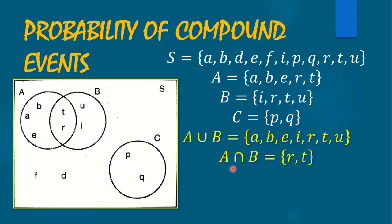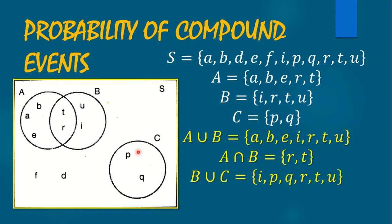For A intersection B, it means the outcomes that are common in event A and B. So we have R, T, U. Then for B union C, we have to get all the outcomes in event B or event C or both: I, P, Q, R, T, U.